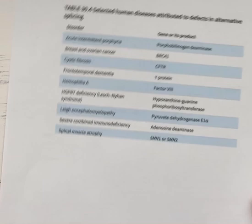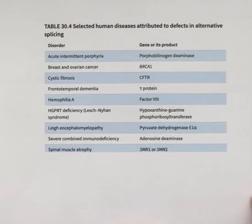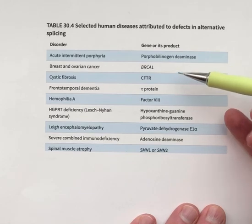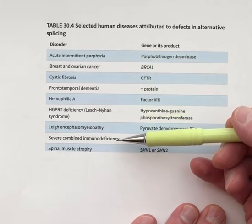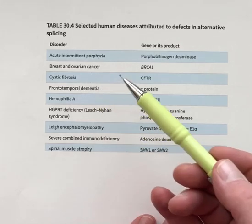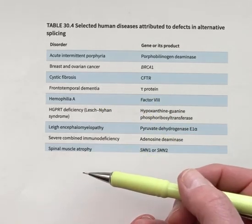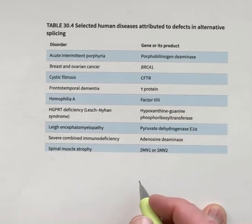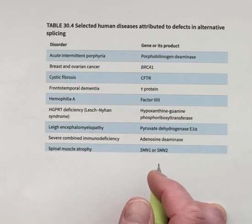Table 30.4 lists all of the different types of disorders or syndromes, including cystic fibrosis and breast cancer, that are related in some way to defects in splicing.